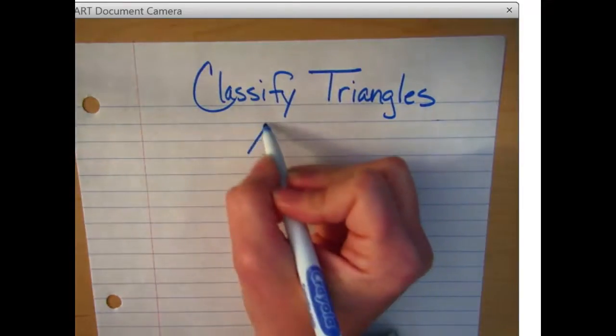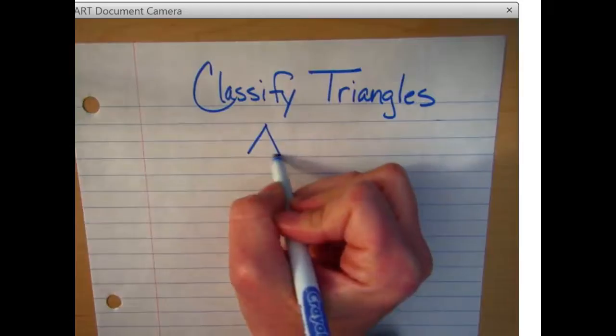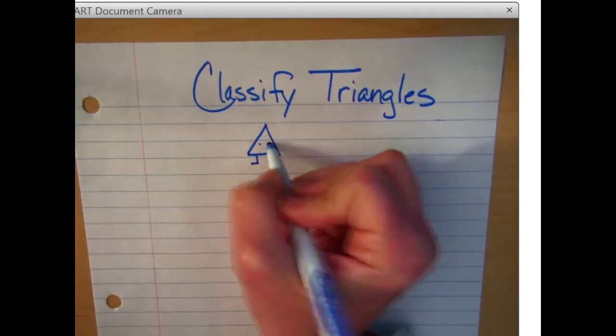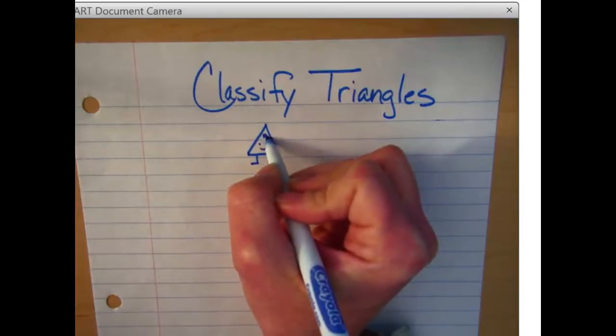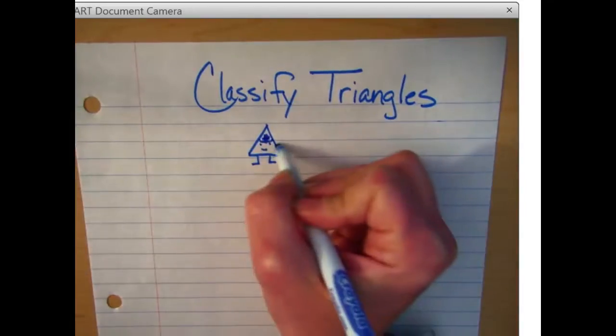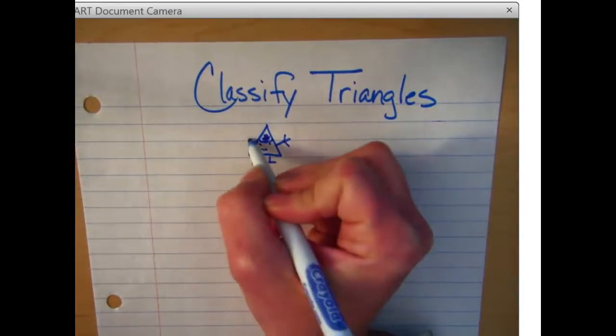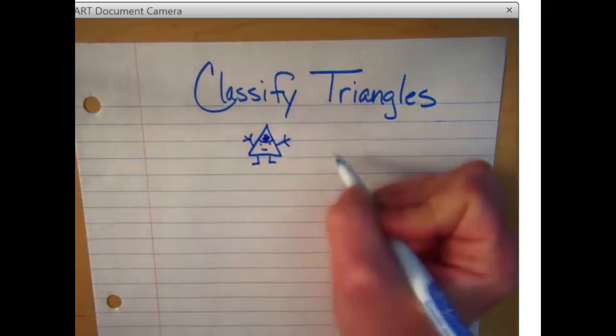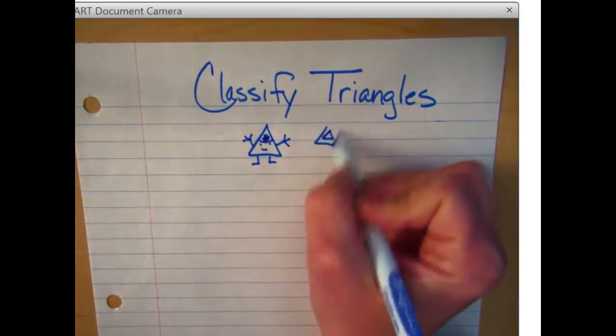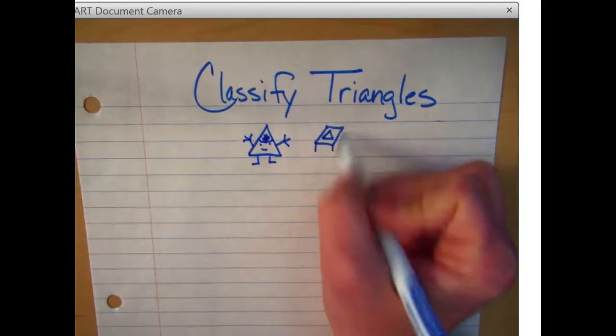At the Triangle Hospital, when the little baby triangles are born, they're given a name. They're given a first name and a last name. And these little triangles are named because of the lengths of their sides and their angles.